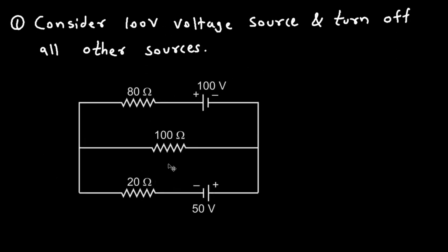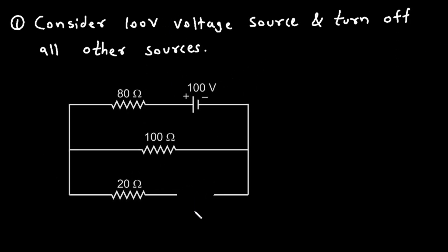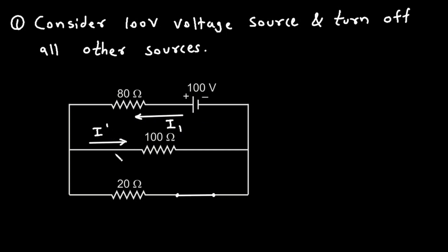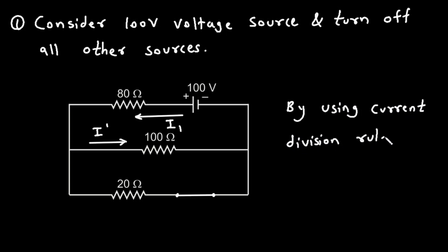If we consider the 100 volt voltage source and turn off all other sources, the other source will be replaced by a short circuit. Let's say the total current is I1, and the current through the 100 ohm resistance is I prime. By using the current division rule, we can find I prime. I prime equals I1 multiplied by the opposite branch resistance, which is 20 ohm.